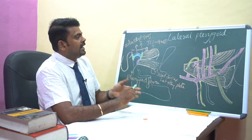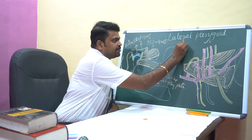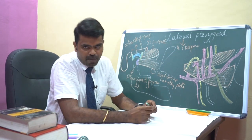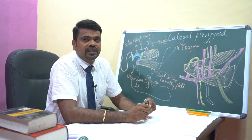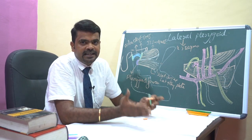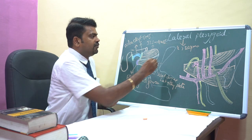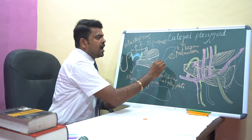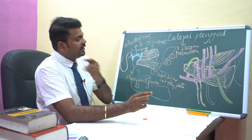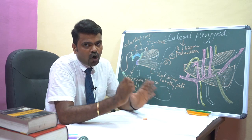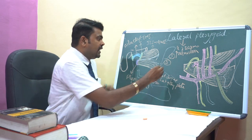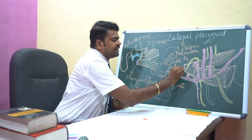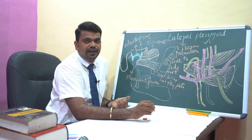Now we will go over the actions. The first main action of the lateral pterygoid muscle is depression of the mandible, or opening of the mouth. The second action is that the lateral pterygoid and medial pterygoid of both sides acting together are responsible for protrusion of the mouth. The third action is that the lateral pterygoid and medial pterygoid of both sides contracting alternately are responsible for side-to-side movement. These are the three main actions of the lateral pterygoid muscle.